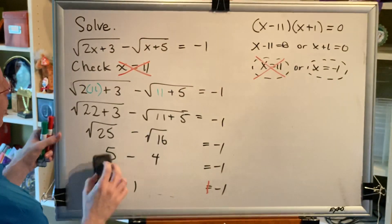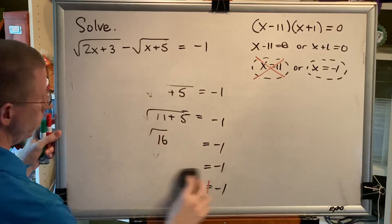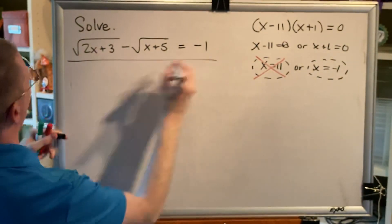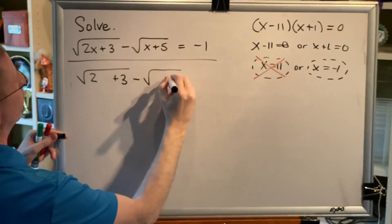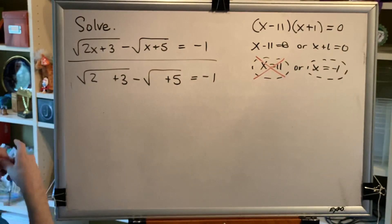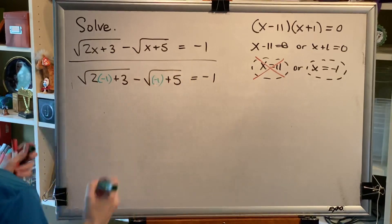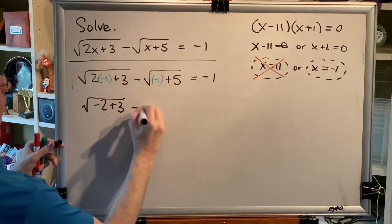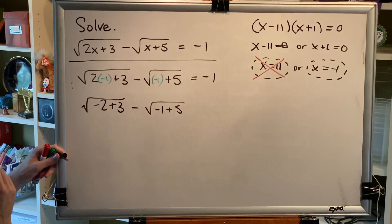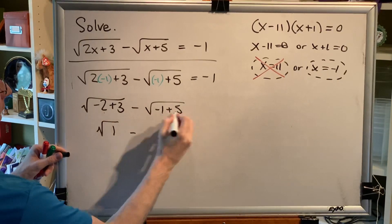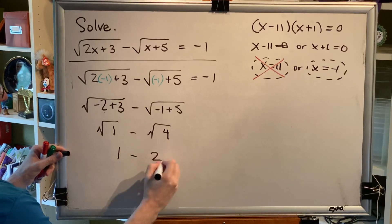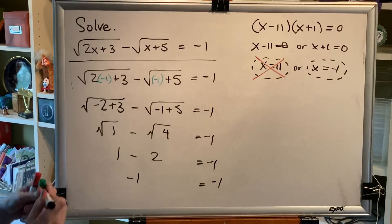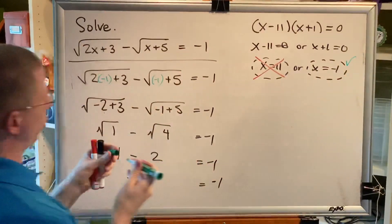Now let's check x equals negative 1. Substituting negative 1 everywhere we see x: 2 times negative 1 is negative 2, and negative 2 plus 3 is 1; negative 1 plus 5 is 4. The square root of 1 is 1, the square root of 4 is 2, and 1 minus 2 equals negative 1. The left side and the right side match, so x equals negative 1 is our only solution to this problem.